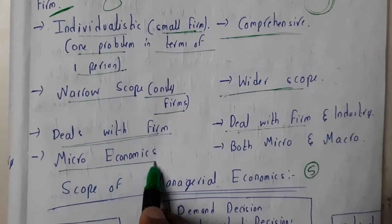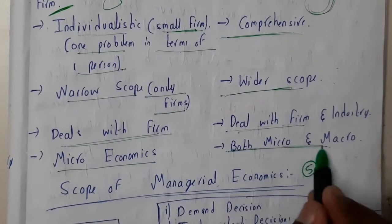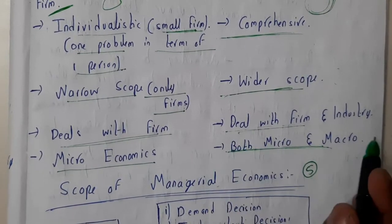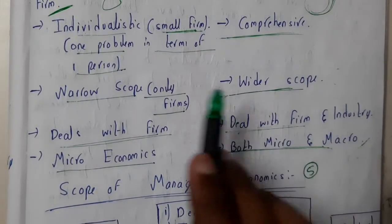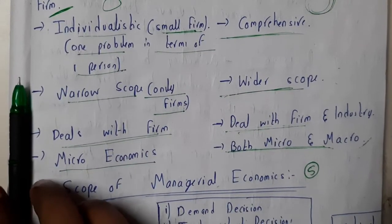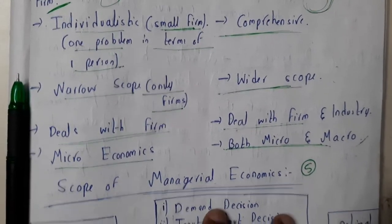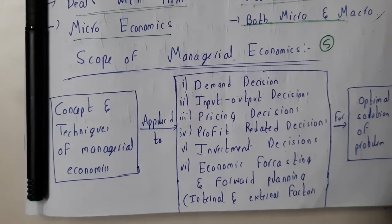So this is also called as microeconomics. This is also called as micro and macroeconomics. I hope everyone got at least a small idea on managerial economics versus economics. In the next lecture, we'll be going through the scope of managerial economics. Thank you, thanks for watching.